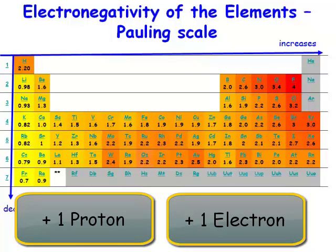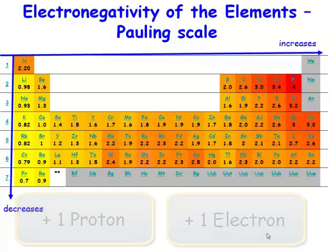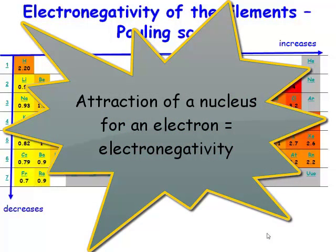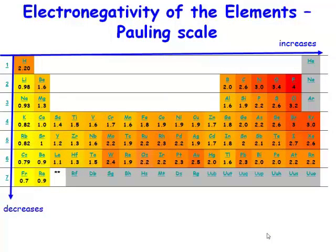It also follows that because the effective nuclear charge is increasing, the electron affinities will increase. It becomes more favorable to add an electron to your atom. And the attraction of a nucleus for an electron is what we're measuring and what we're talking about when we're describing electronegativity. So because the effective nuclear charge increases from left to right across the periodic table.